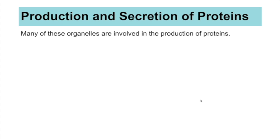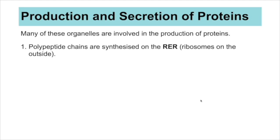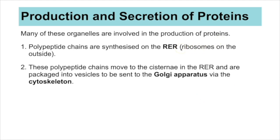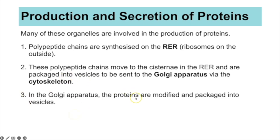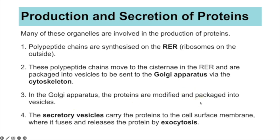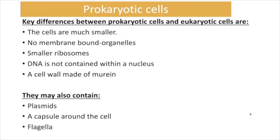Some organelles are involved in protein production and secretion. Polypeptide chains are synthesised on the ribosomes of the rough endoplasmic reticulum, then move to the cisternae of the RER where they are folded and packaged into vesicles. These vesicles travel through the cytoskeleton to the Golgi apparatus, where proteins are modified further and packaged into secretory vesicles. Those vesicles carry the proteins to the cell surface membrane, where the vesicle fuses and releases the protein by exocytosis.